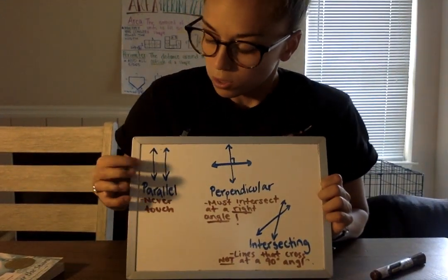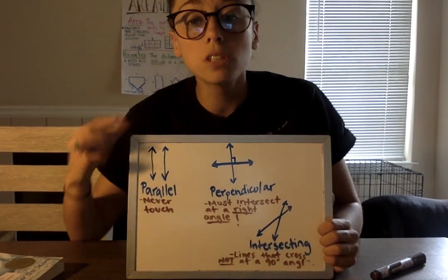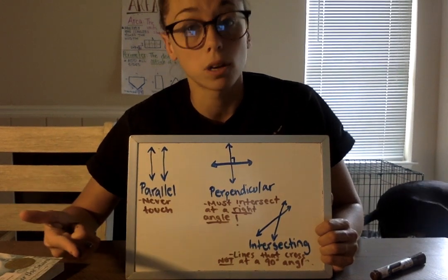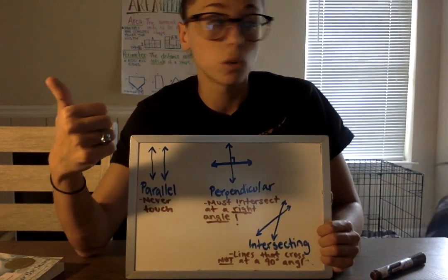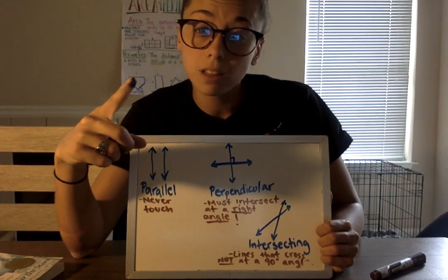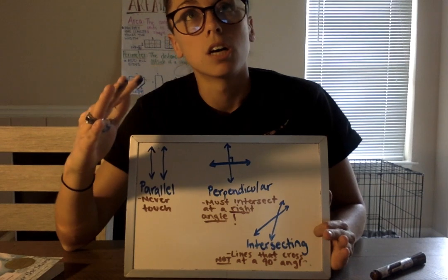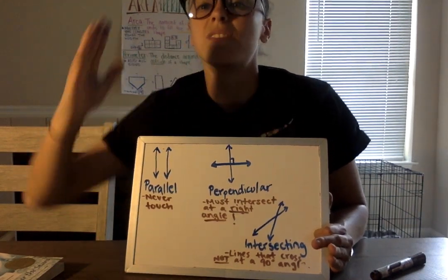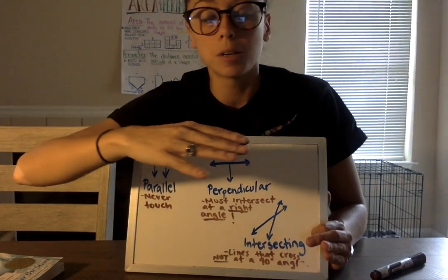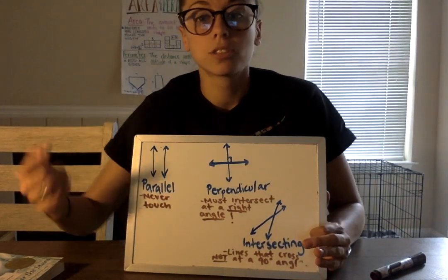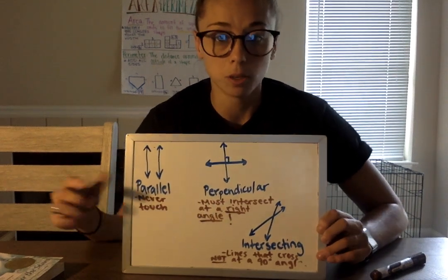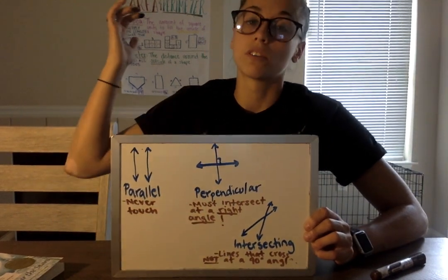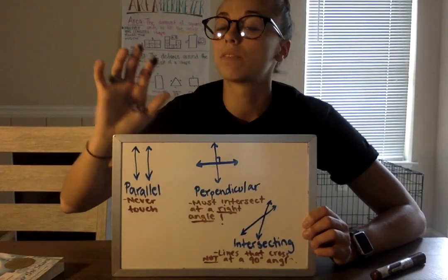The most important thing about parallel lines is that they never touch. We talked about this a little bit when we were working on polygons and classifying quadrilaterals — a trapezoid only has one set of parallel lines. The side ones are slanted so eventually they'd run into each other, but the top and bottom never touch. That's why they are parallel. The arrows mean lines go on forever, and these parallel lines would never touch.